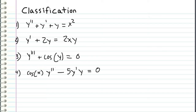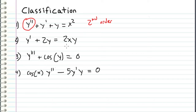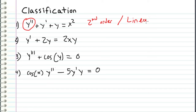Here are a few examples we can practice classifying. For each of these, we're going to decide its order and its linearity. In this first example, the highest order is the second derivative, so we call it a second order differential equation. Each of the terms containing y are all to the first power, and they all have coefficients that do not include y or a derivative of y — they're all one. On the right side we have only a function of x, so this is a second order linear differential equation.